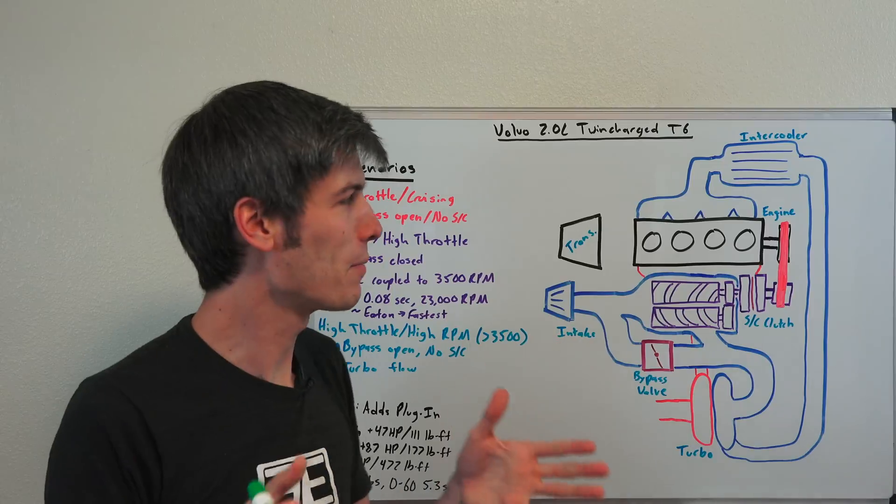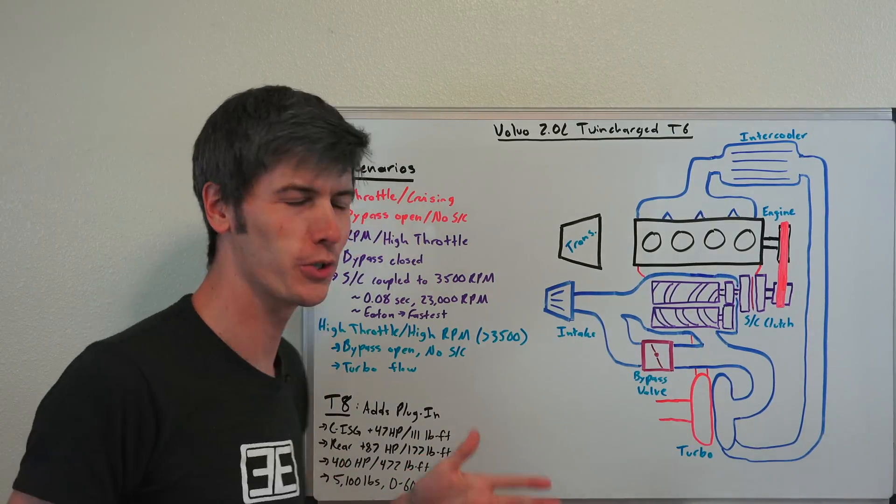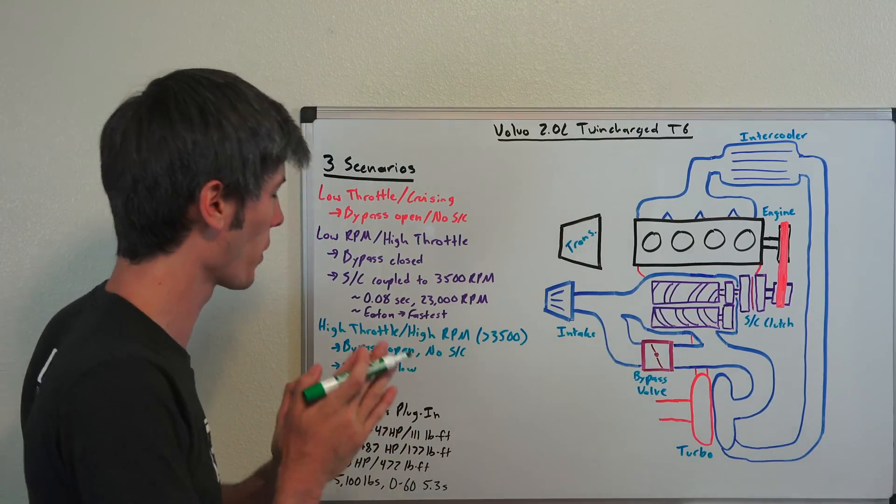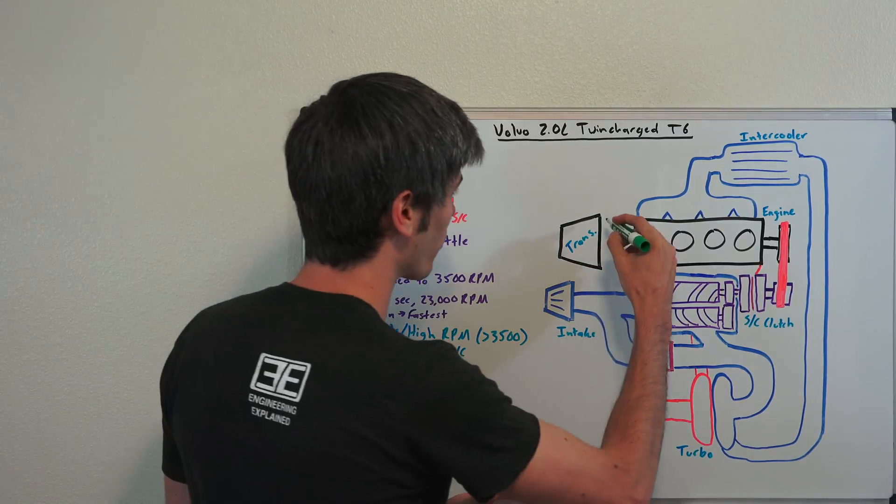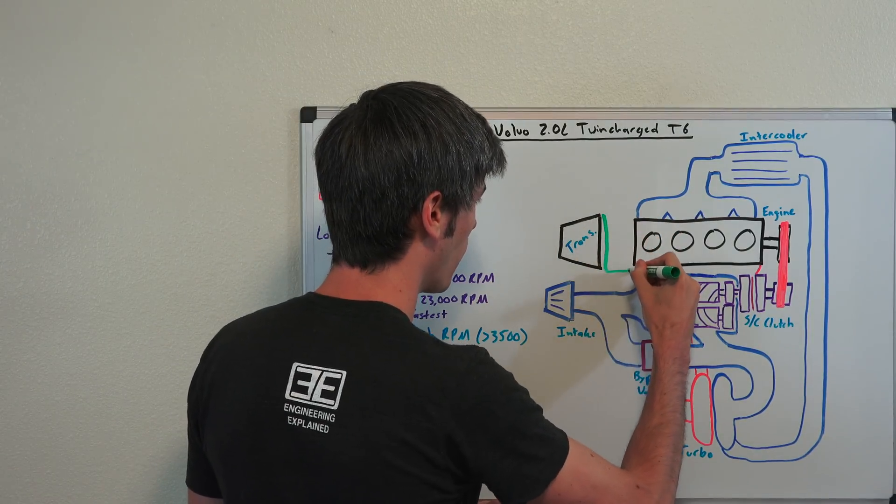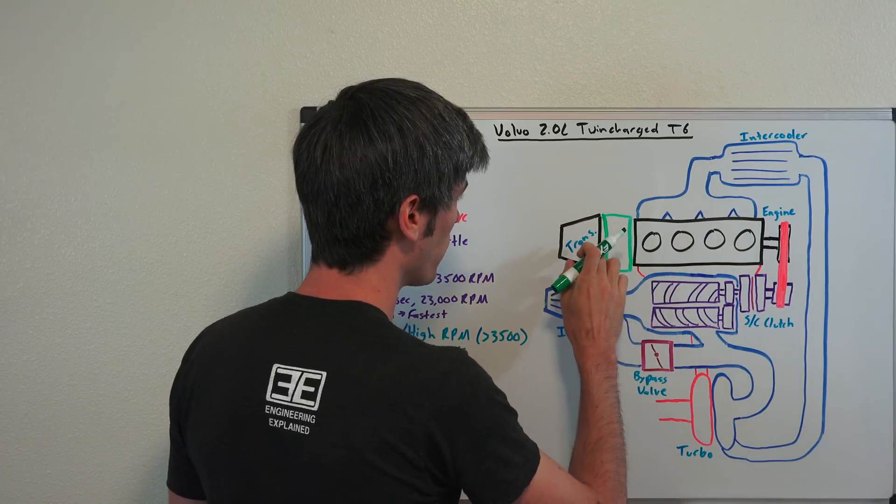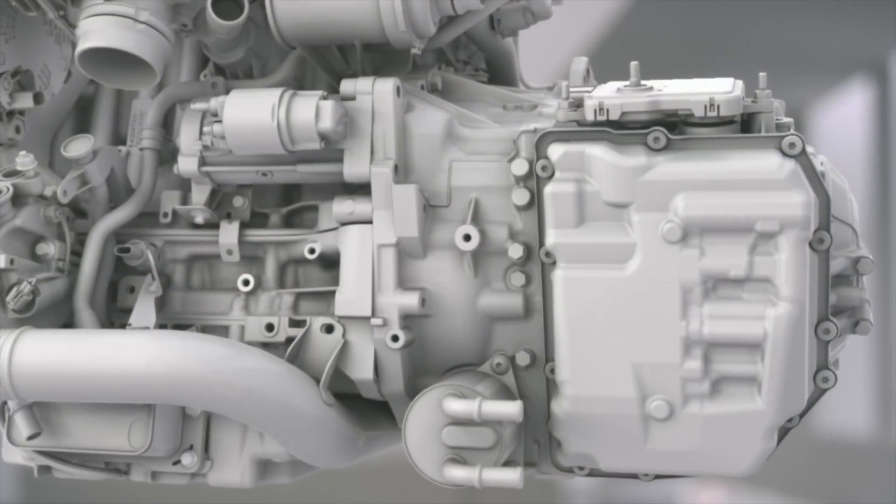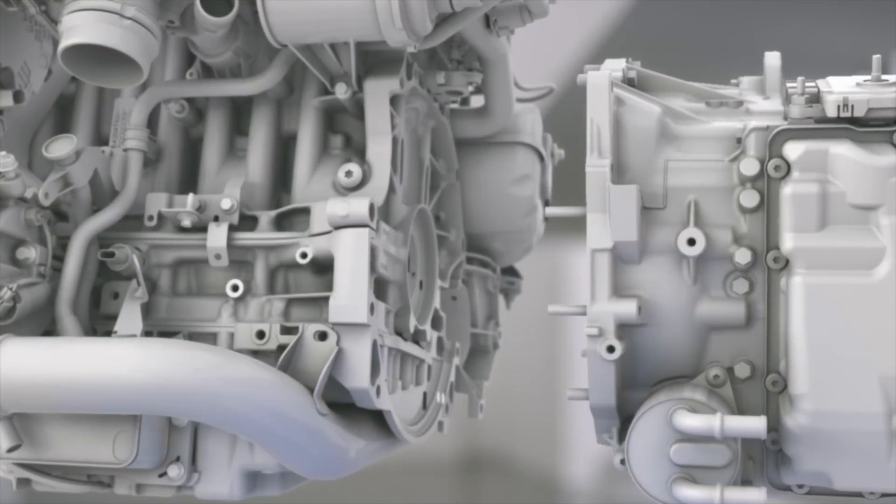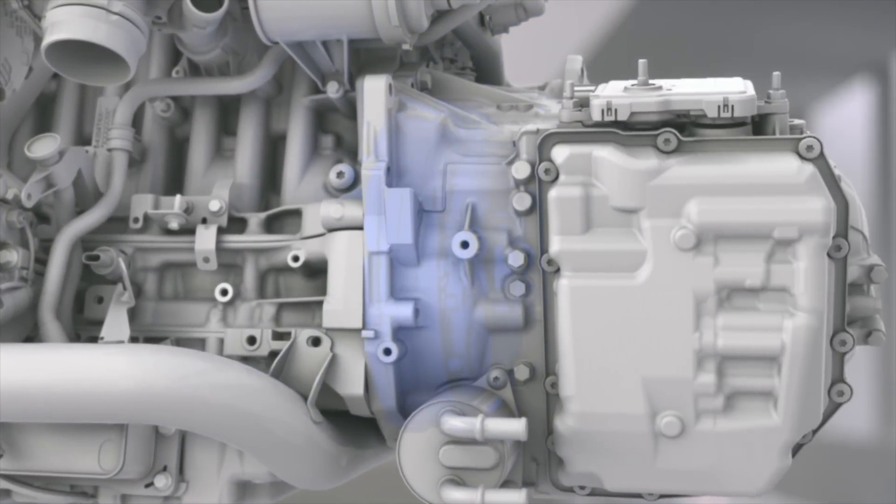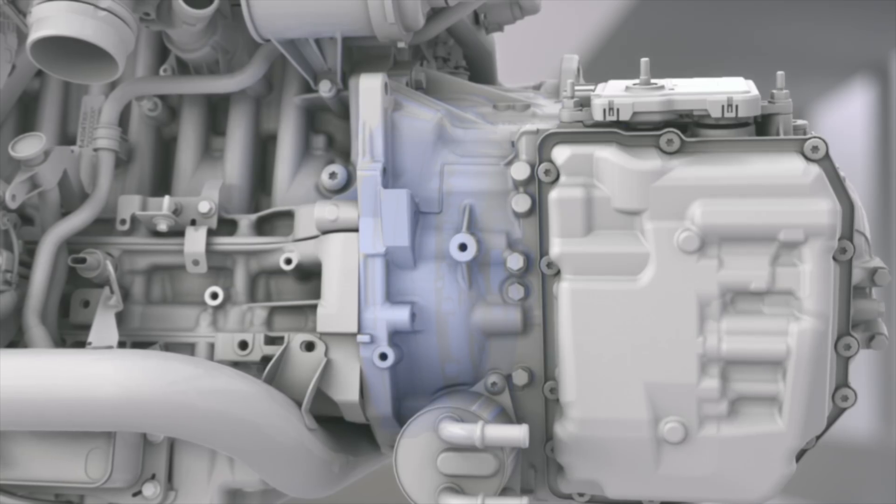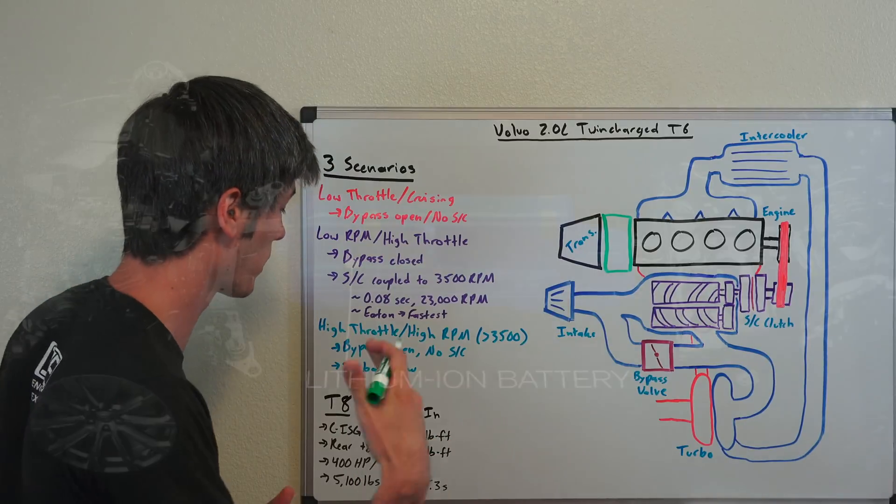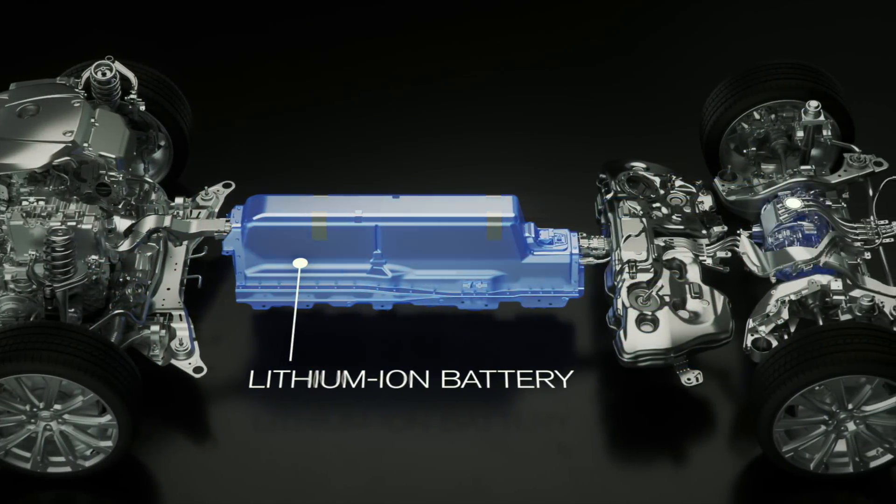Now, Volvo doesn't just stop here with this engine. So it's supercharged, it's turbocharged, and you can also get it as a plug-in option with their T8 engine. And so what they do is they add in a motor right here between the transmission and the engine. So this is what they call a crank integrated starter generator. And so this is going to have an additional 47 horsepower and 111 pound-feet of torque. And then they also add an additional motor to the rear of the vehicle with 87 horsepower,